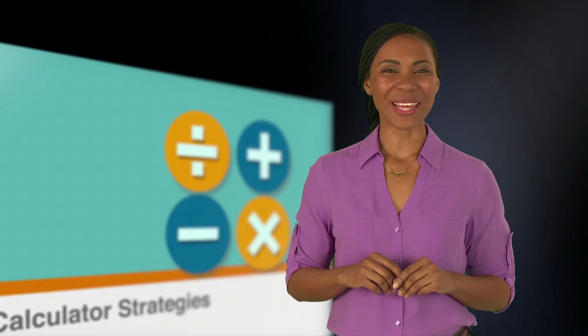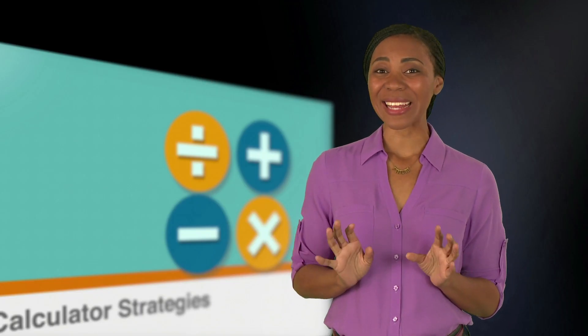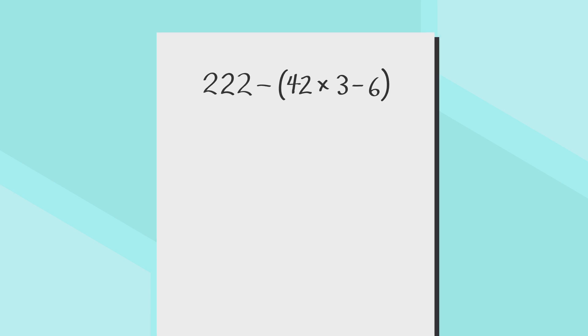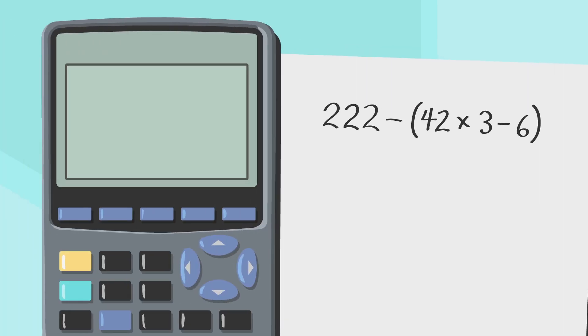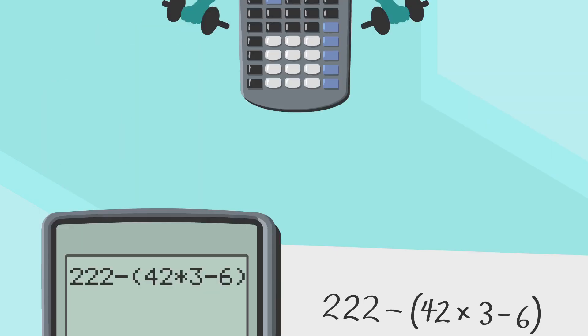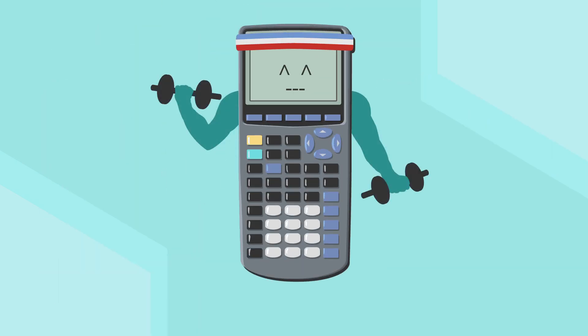One more common mistake with calculators is the dreaded negative sign. Make sure that whenever you have a negative outside of parentheses, like in this problem, that you keep the parentheses exactly where they are when you enter them into your calculator. Your calculator will take care of the heavy lifting of distributing the negative, so that you can carry on with your test in relative peace.